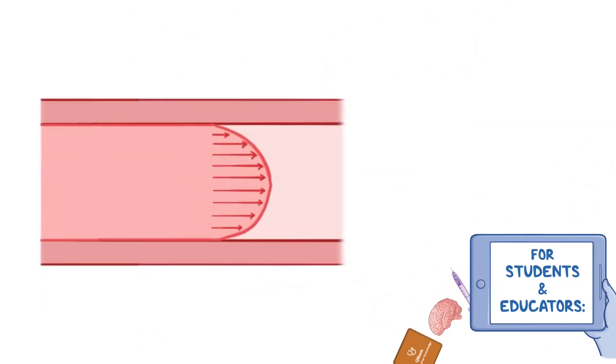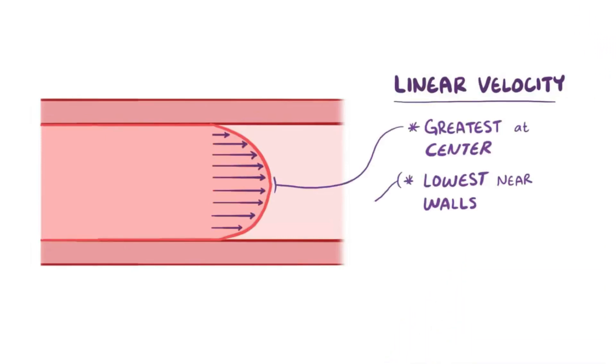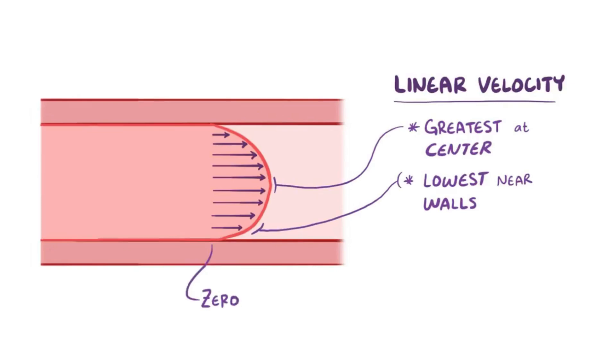Now if everything's moving like it should and blood flow is laminar, then the linear velocity of the blood, which is how fast it's moving in a straight line, is greatest in the center of the blood vessel, and lowest near the walls of the vessel, dropping to zero at the wall.